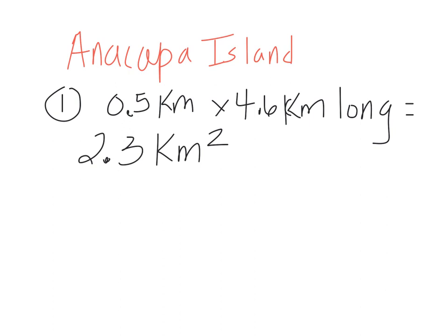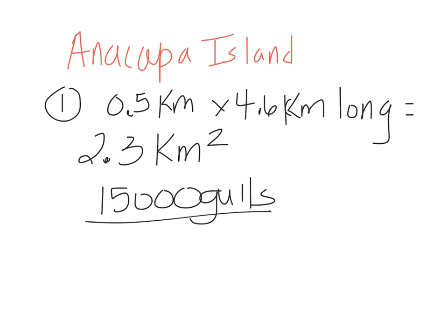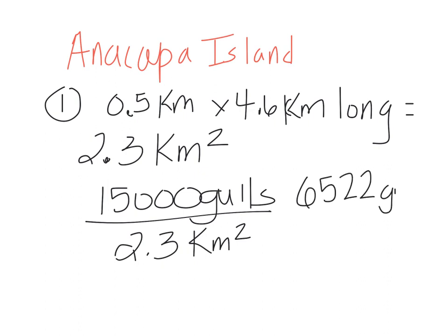Now we take the 1,500 goals that live there and divide by 2.3 kilometers squared. When you use your calculator, you're going to get 6,522 goals per square kilometer. Let's talk about our rounding. At the top of this paper it says to round to three significant digits as needed. Our answer actually came out as a long number: 6,521 point something...